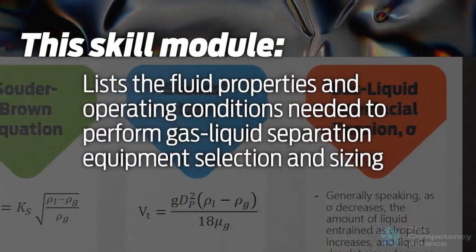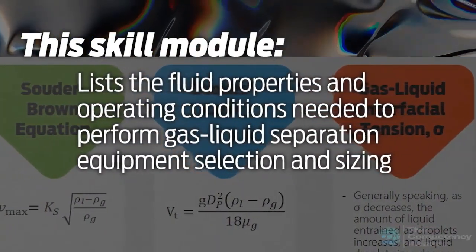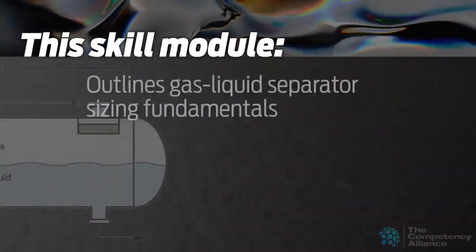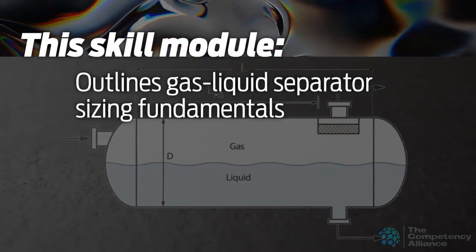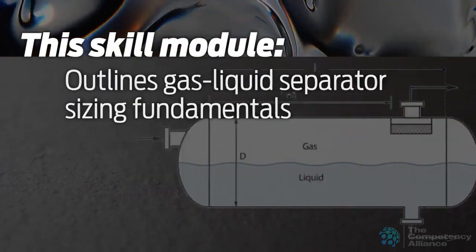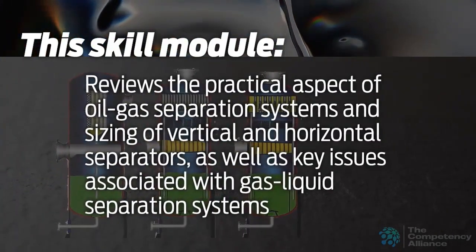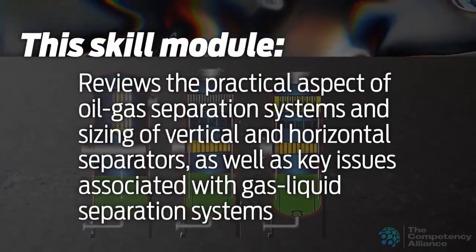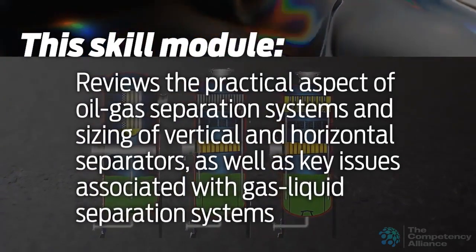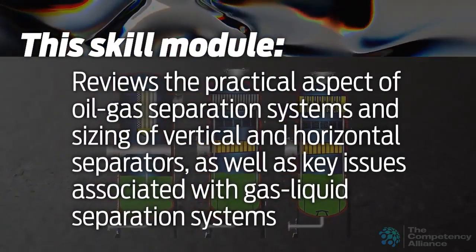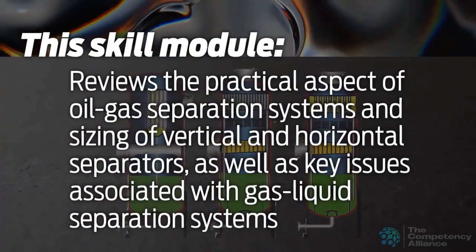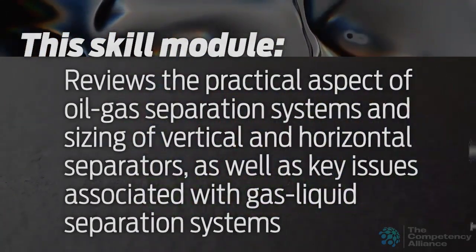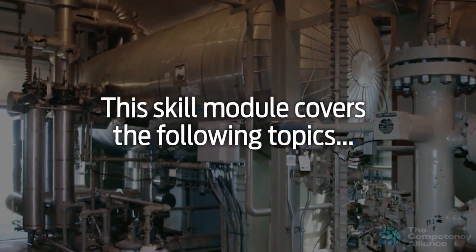The module lists the fluid properties and operating conditions needed to perform gas-liquid separation equipment selection and sizing. It outlines gas-liquid separator sizing fundamentals and reviews the practical aspects of oil-gas separation system sizing of vertical and horizontal separators, and the key issues associated with gas-liquid separation systems, including feed pipe, inlet devices, mist extractors, etc.